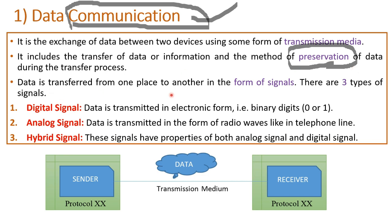Data is transferred from one place to another in the form of signals. How is the data transferred? It is transferred in the form of signals. When we are transferring the data, it is done in the form of certain signals. When we talk about signals, there are three different types, and the data can be communicated in any one among these three forms.